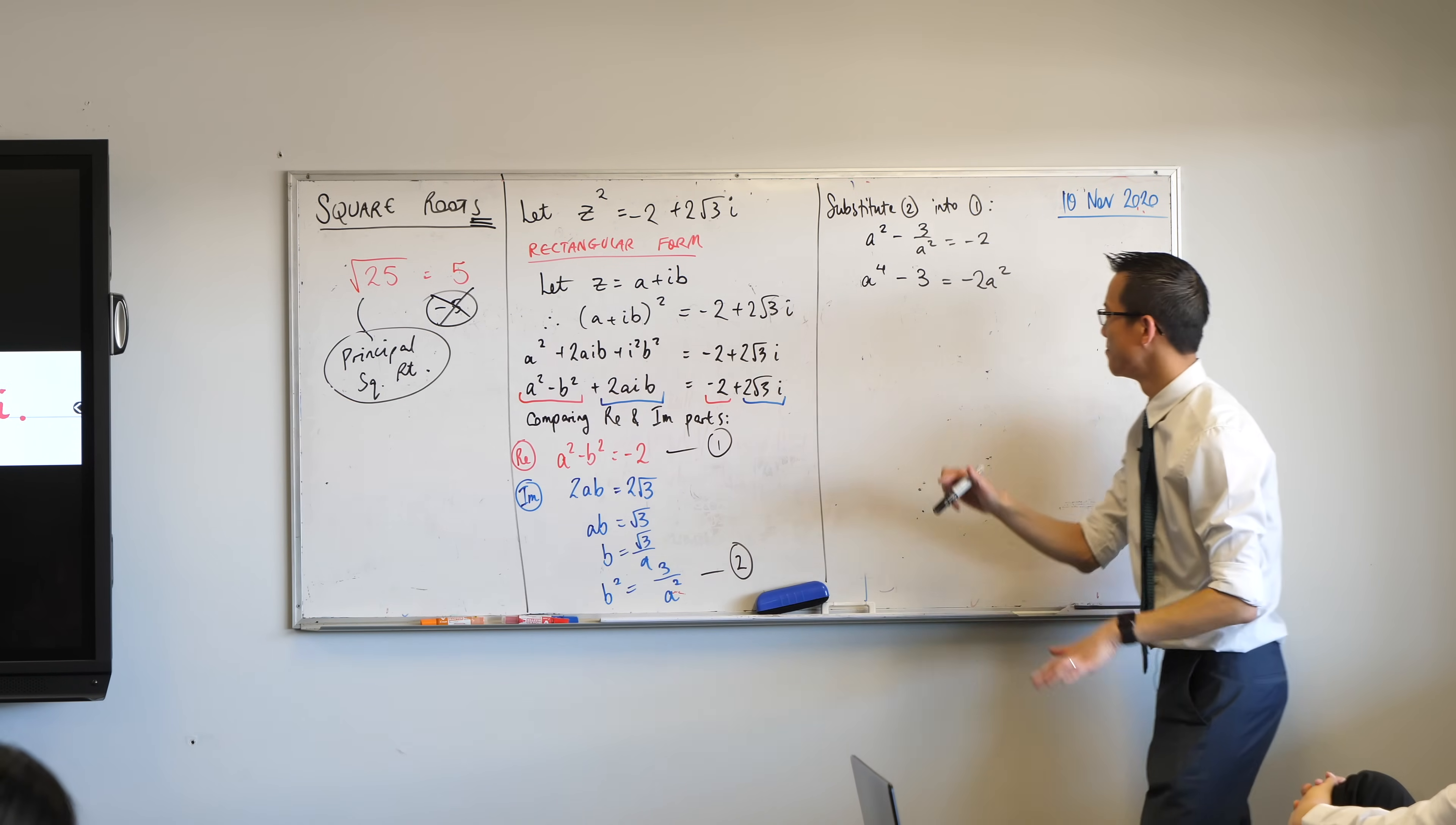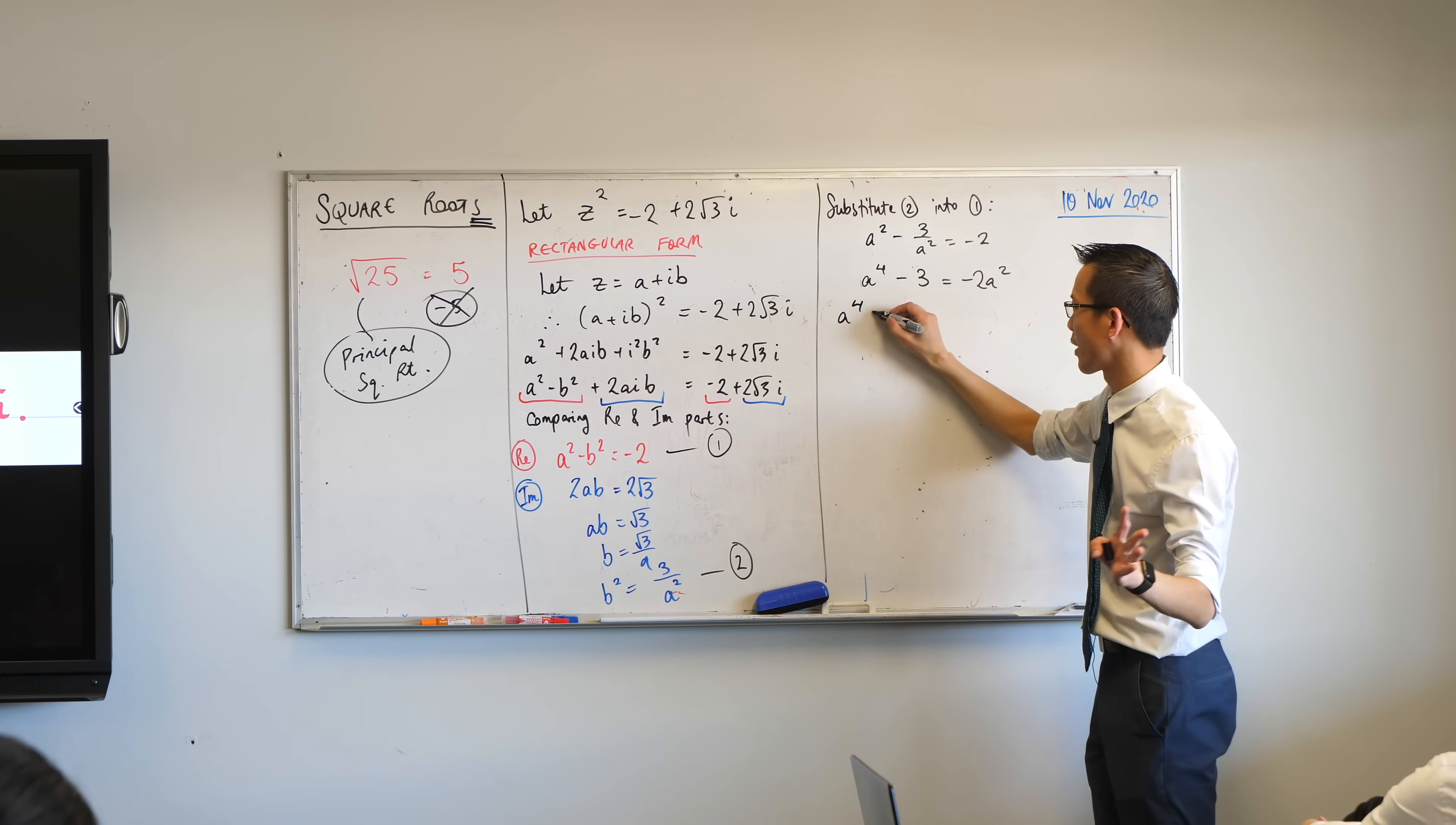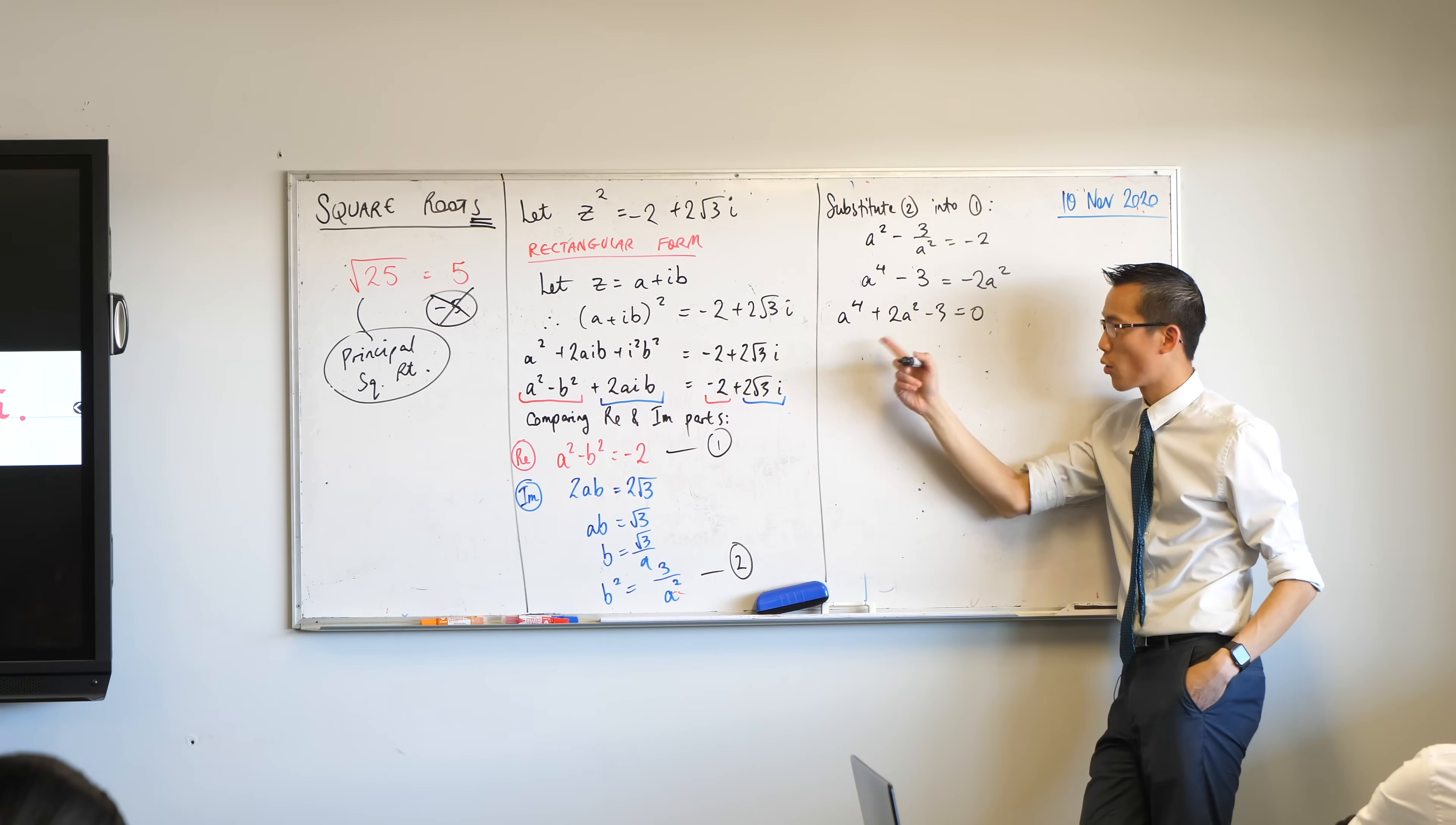Now here's the thing. The four does look intimidating. But it truly is okay. Because if we just get everything all on the one side, you'll see you can think of this as something quite easy to factorize.